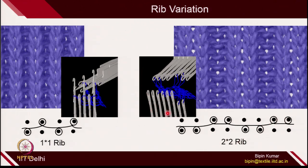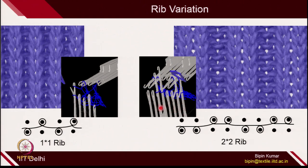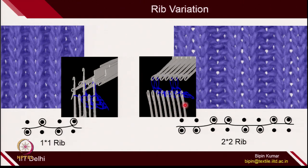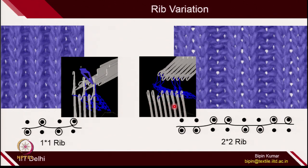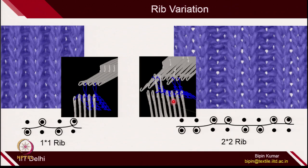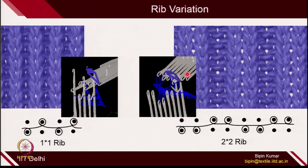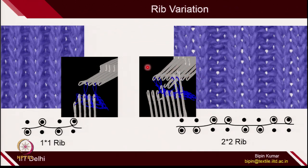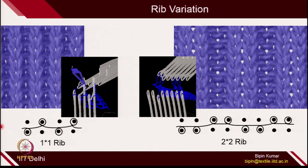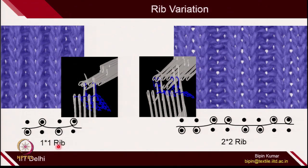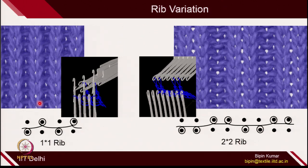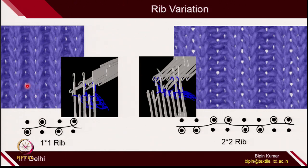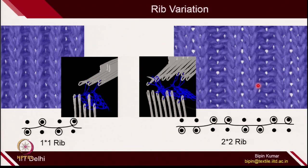On the machine you can see these 2 needles and those 2 needles are operating; the other 2 needles are not participating. Similarly on the back bed the same nature is there. This is how 1×1 rib and 2×2 rib are being created. If you see the porosity of the fabric, in 1×1 rib you can see the holes are smaller compared to 2×2 rib.